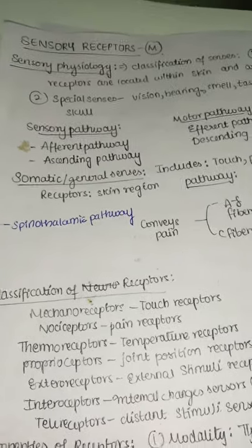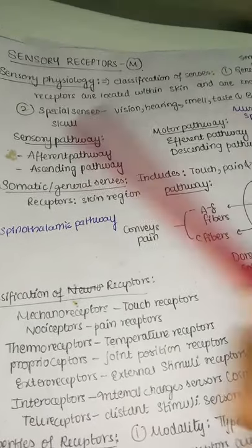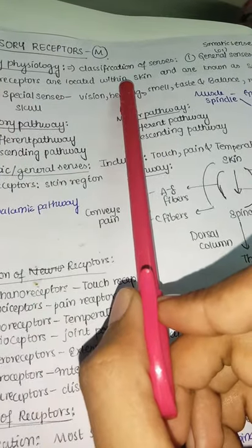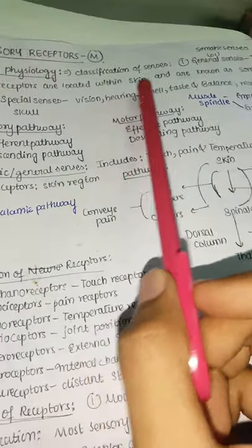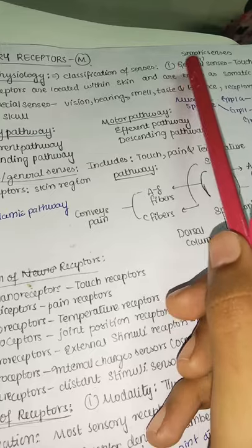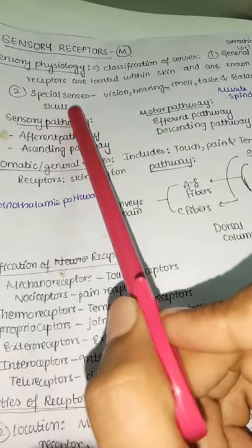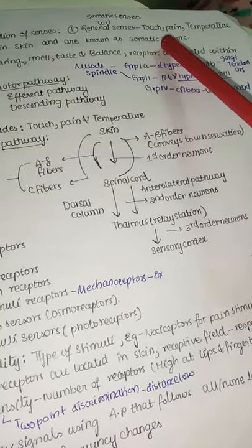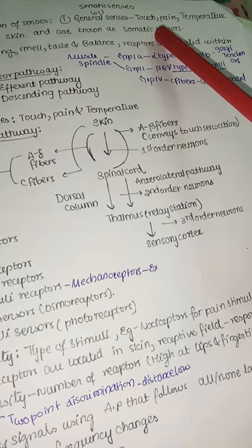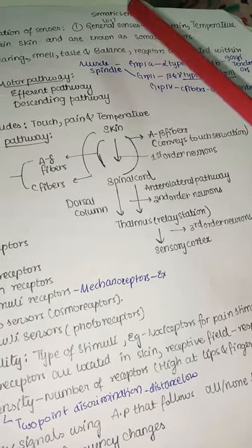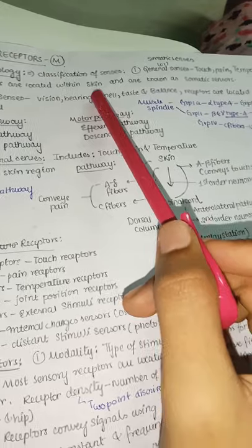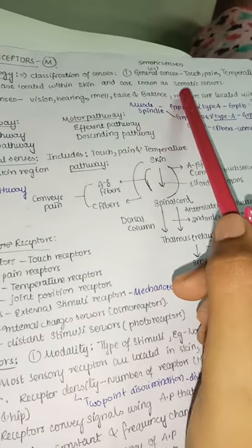Now we are at sensory physiology. Senses are mainly divided into general senses (also called somatic senses) — like touch, pain, and temperature — where receptors are located in the skin, and special senses — like vision, hearing, smell, taste, and balance — where receptors are located within the skull.